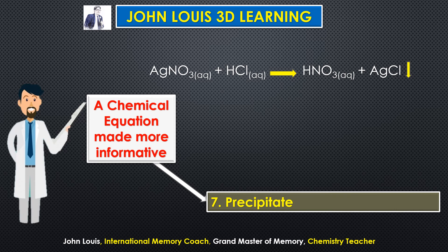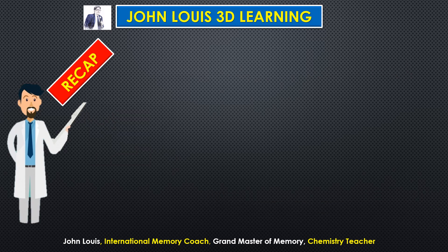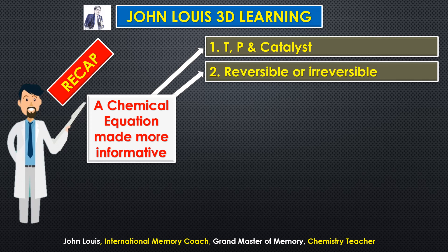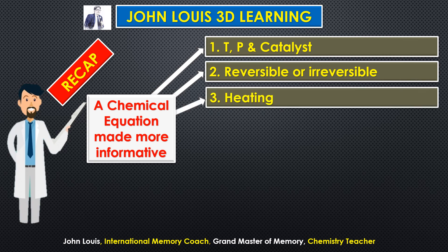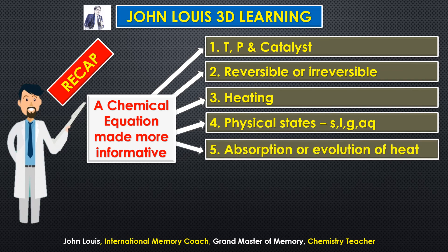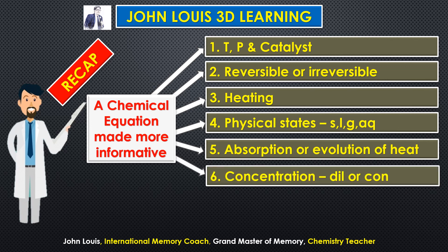Let us quickly recap. First: temperature, pressure, and catalyst can be mentioned. Second: whether the reaction is reversible or irreversible. Third: whether we have to supply heat, indicated by a triangle above the arrow mark. Fourth: the physical states of reactants and products can be mentioned. Fifth: whether heat is absorbed or evolved — plus heat means evolved, minus heat means absorbed.